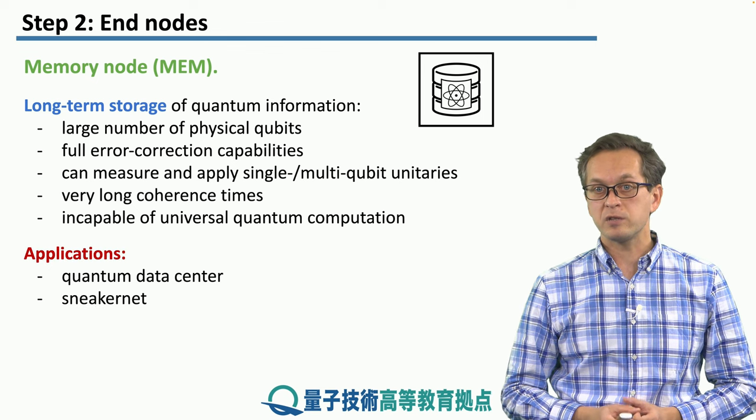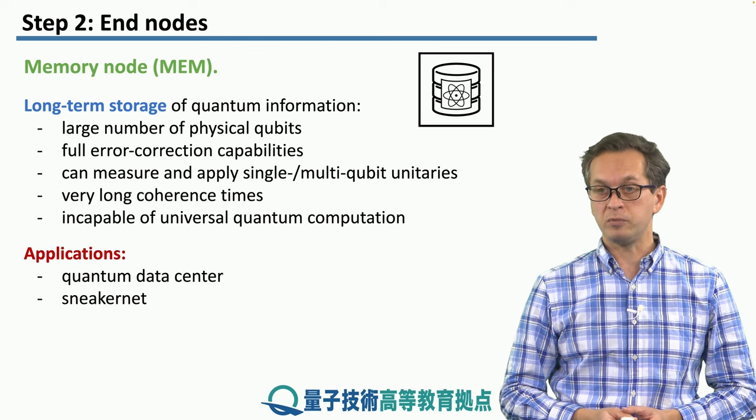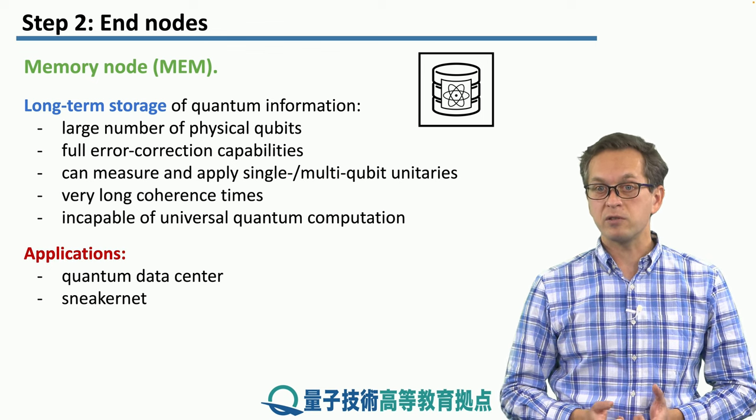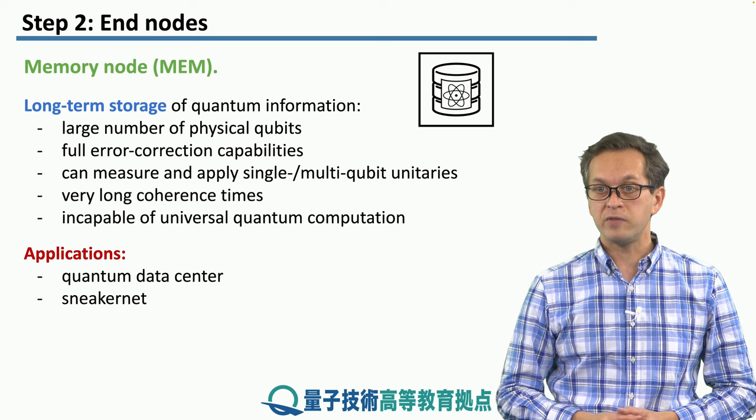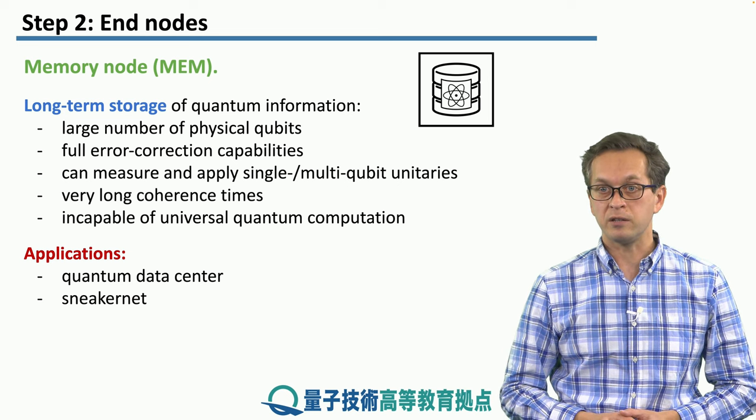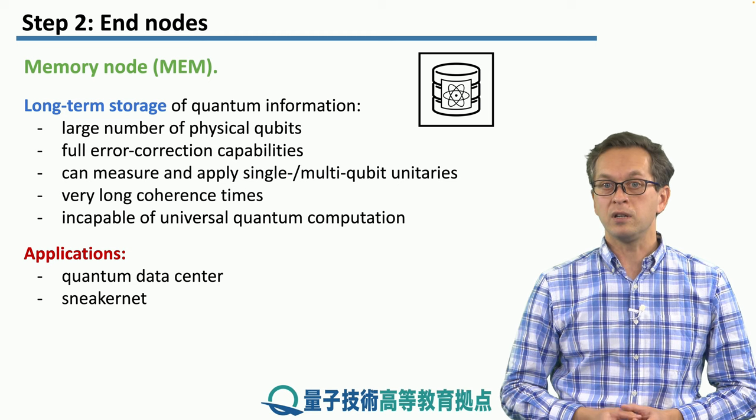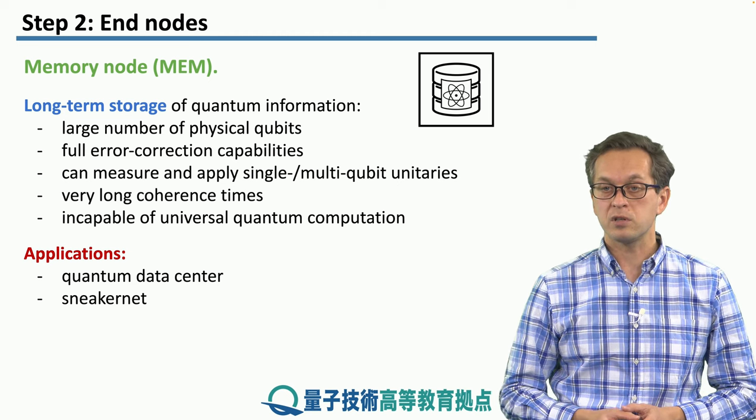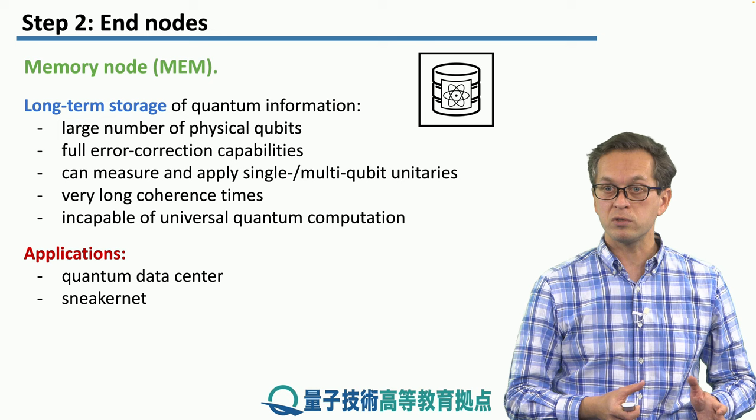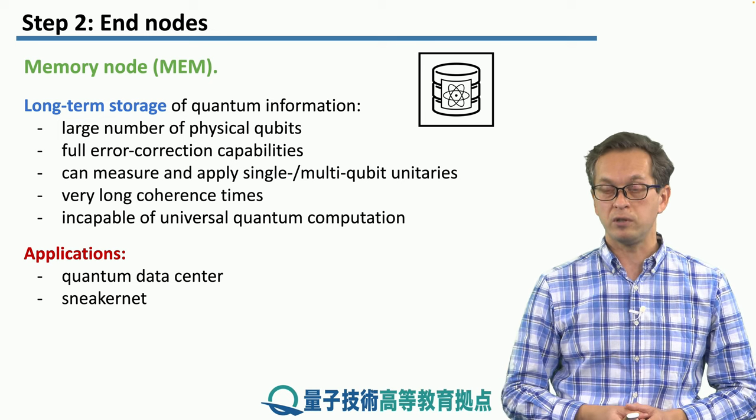The applications of such a node might be in quantum data centers, and also in sneakernet. We have seen sneakernet in our lesson on link architecture, where large storage nodes store the quantum information, and the nodes themselves are then physically transported to their destination.